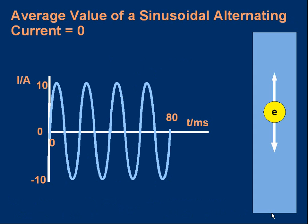One important thing to note about a sinusoidal alternating current: the average current is zero. Some of the time it's positive, some of the time it's negative, and the average value turns out to be zero. If you followed an electron in the wire, it flows one way, then the other, one way then the other, and repeats that pattern. There is no overall movement of electrons, no net charge flow — only vibration of the charge — so the average current is zero.